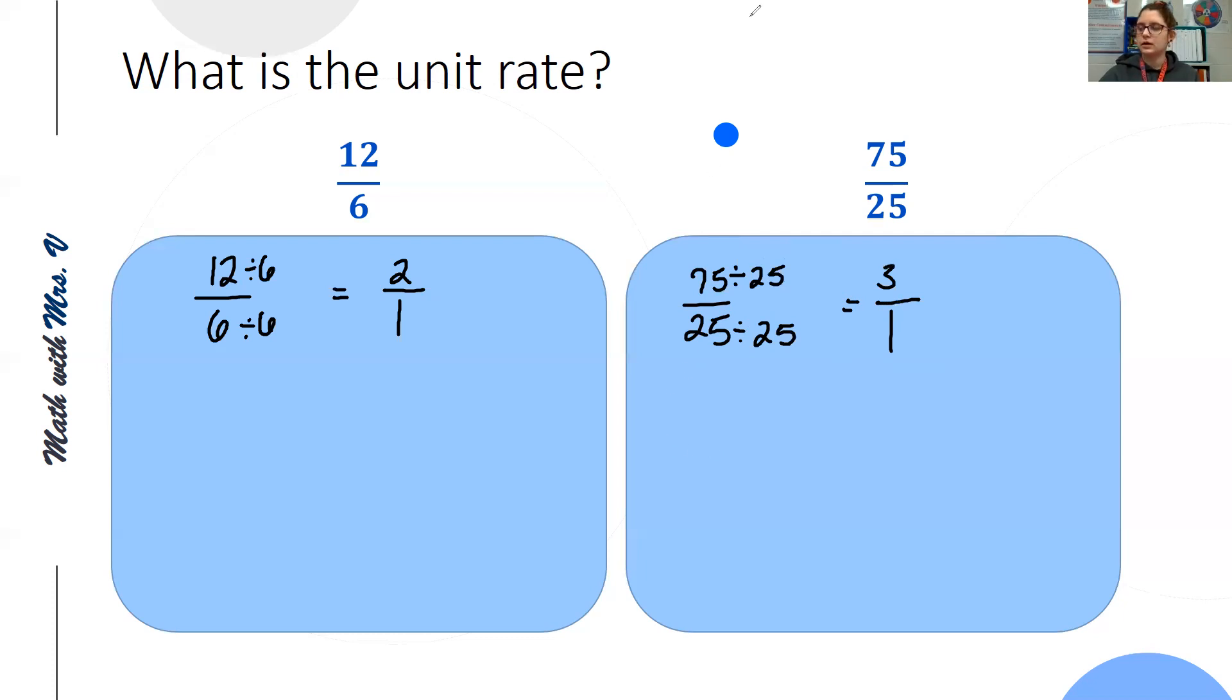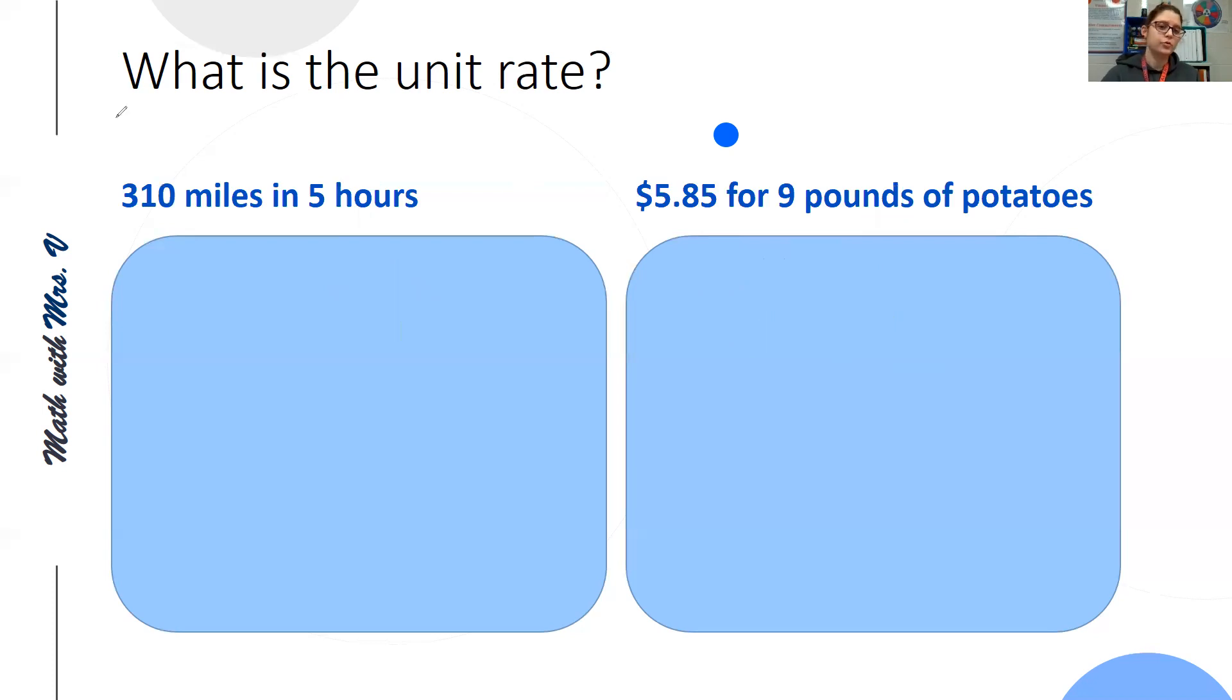Let's look at a few more examples that are actually defining what our numbers represent. So our next one, I traveled 310 miles in 5 hours. What is my unit rate?